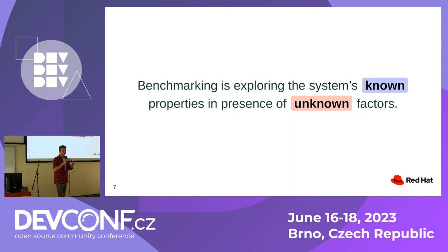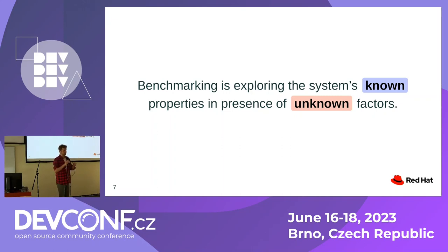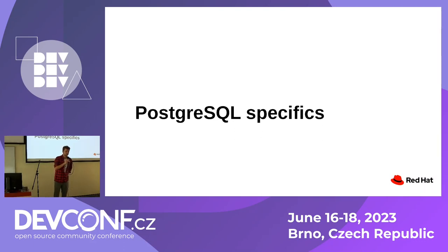This duality — known versus unknown — is very important for benchmarking, and I'll emphasize it throughout the presentation. It comes paired with another duality: when we benchmark and want to understand results, we always have to combine two skills. We need general skills like statistics and experimental design to address the unknown part, and at the same time we need particular domain knowledge — like Postgres internals — to extend the known part and reduce the unknown. You cannot go without the other one. The rest of the slides will be divided into these two categories: Postgres specifics, and the common statistical tools.